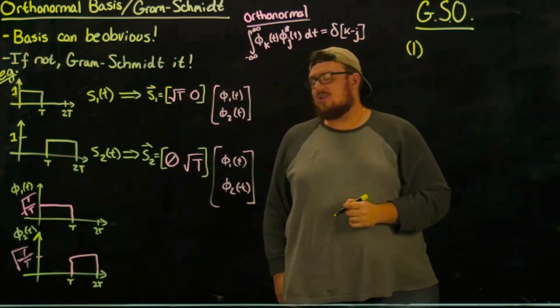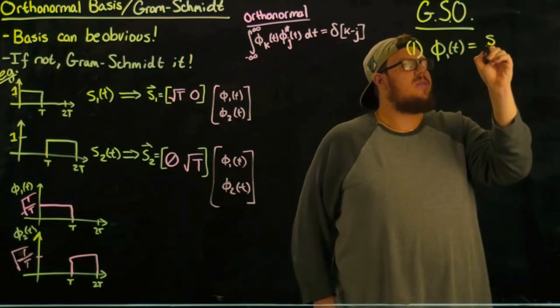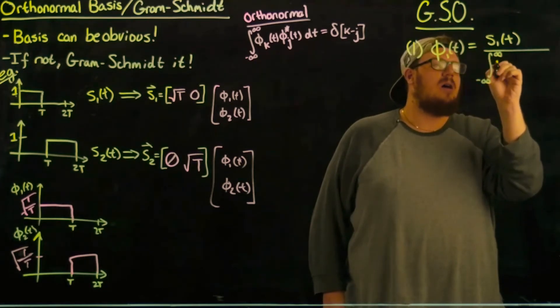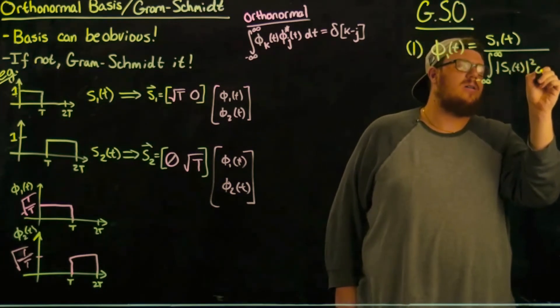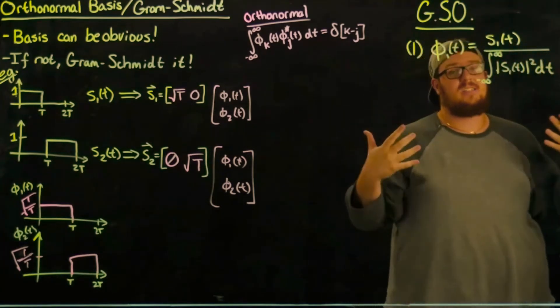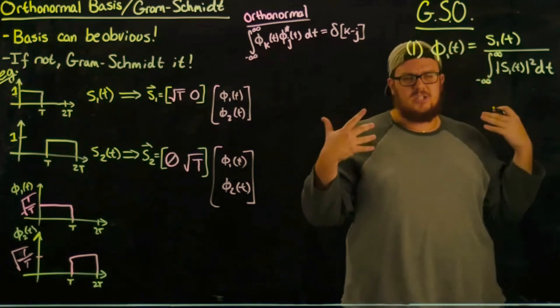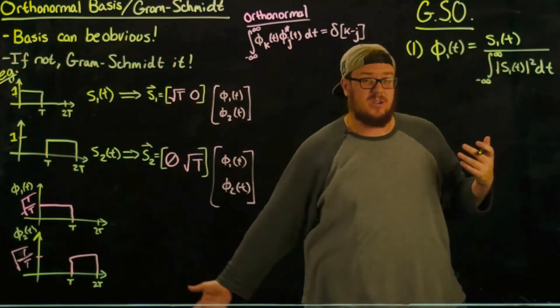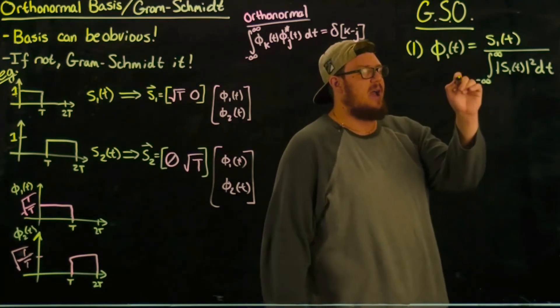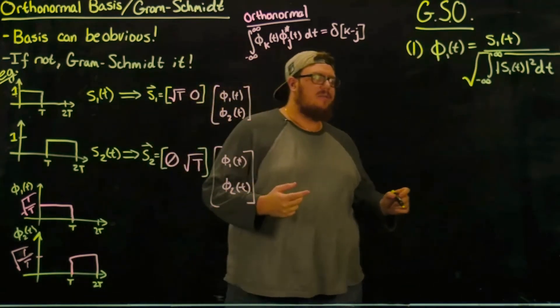The initialization process is to take the first basis and set it equal to the normalized first signal. So we take s_1(t) and divide it by the square root of the integral overall time of the magnitude of s_1(t) squared. So basically we take the signal and divide it by the square root of the energy so that the resulting φ has unit energy, which is what we wanted, and we call that our first basis.